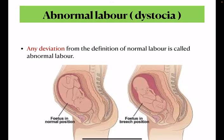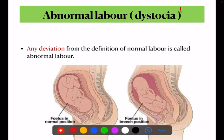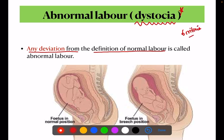Next, what is abnormal labor? Abnormal labor is also called dystocia — that is its other name. Any deviation from the definition of normal labor is called abnormal labor. We read six criteria; if any one of those criteria is not fulfilled or there is any deviation from normal, we call it abnormal.